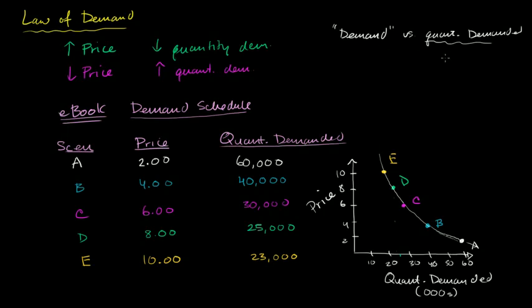So just going back to what I said earlier. The quantity demanded is all else equal for a given price, how many units people are willing to download or buy of my e-book. When we talk about the demand itself, we're talking about this entire relationship. So this demand itself is this entire demand schedule, or another way to think of it is this entire demand curve.